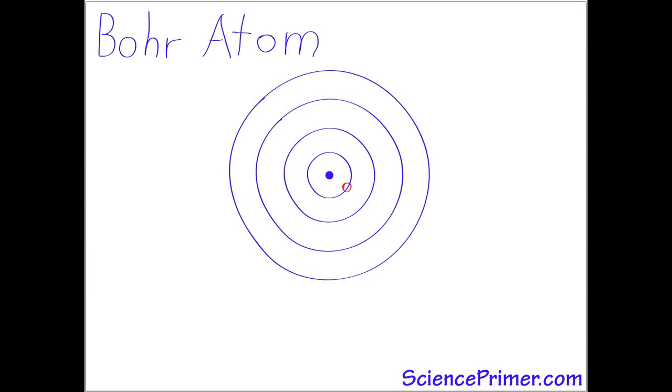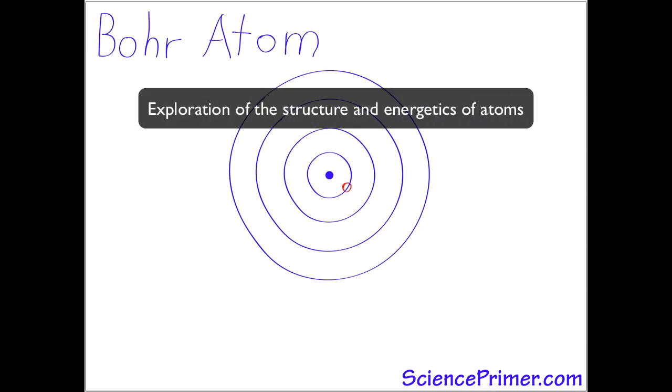The Bohr model of the atom, developed in the early 20th century, was an attempt to explain observations about the way atoms and electrons absorb, retain, and release energy.